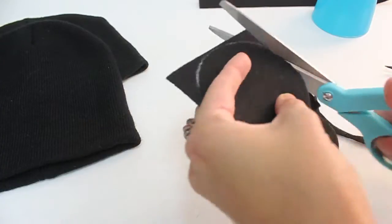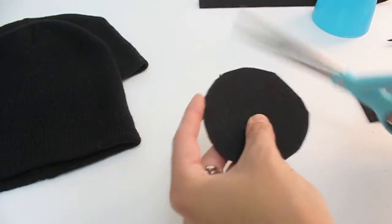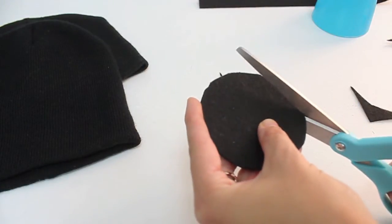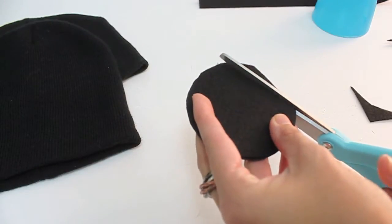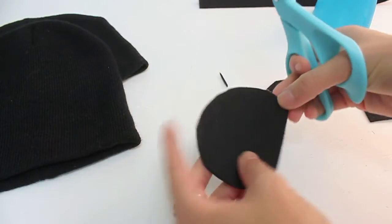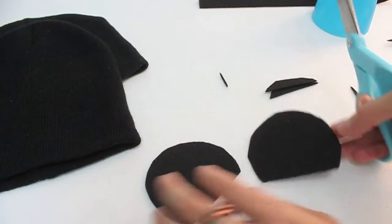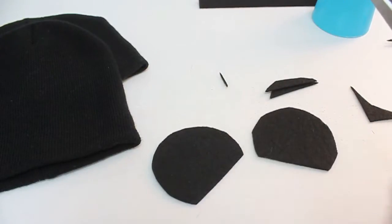Once they're completely cut out, you want to set them together to make sure that they're round and equally the same. At the very bottom of one side, you want to make it flat. This is the part that's going to go on the inside of your beanie. As you can see, your ears are starting to form.